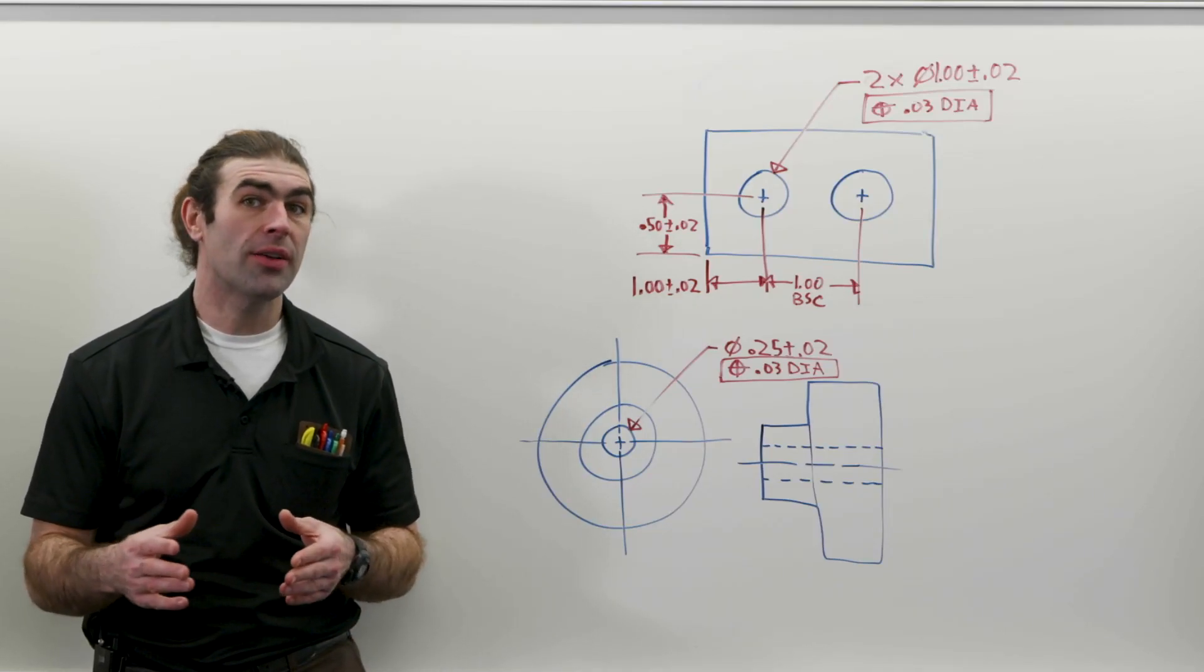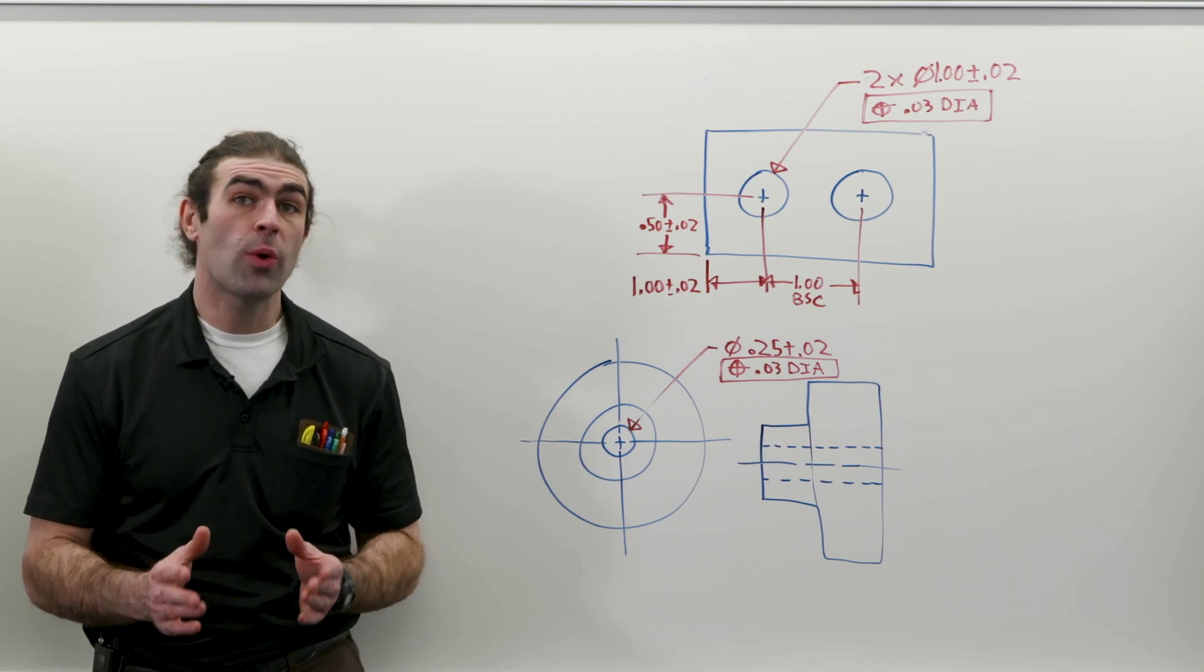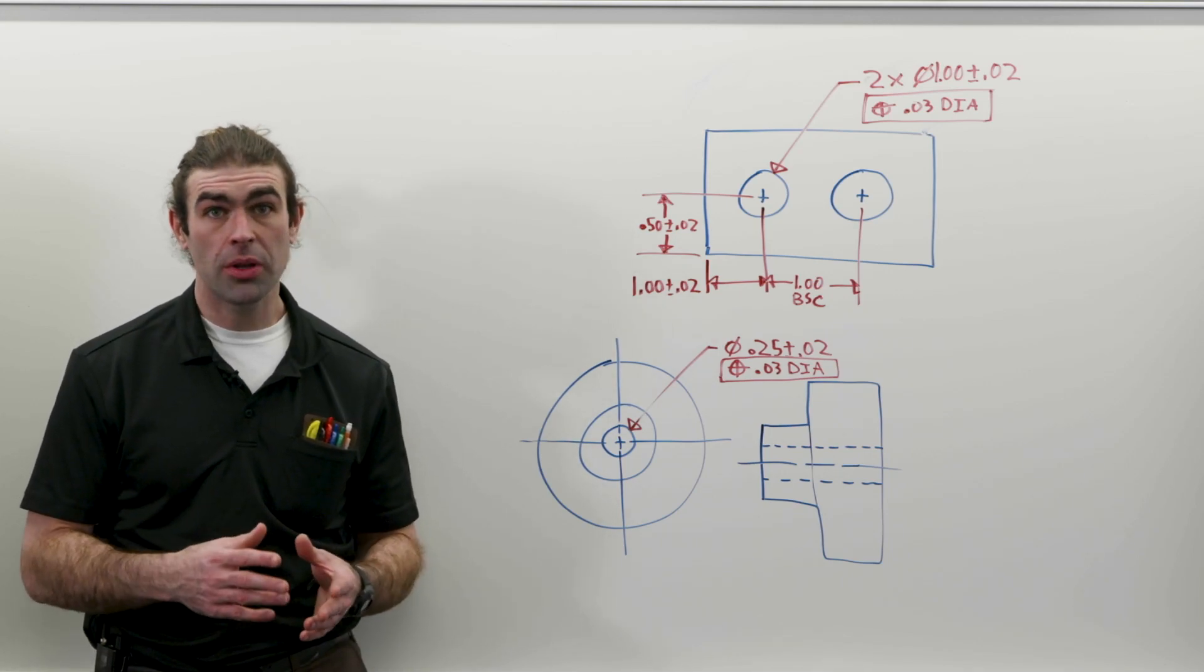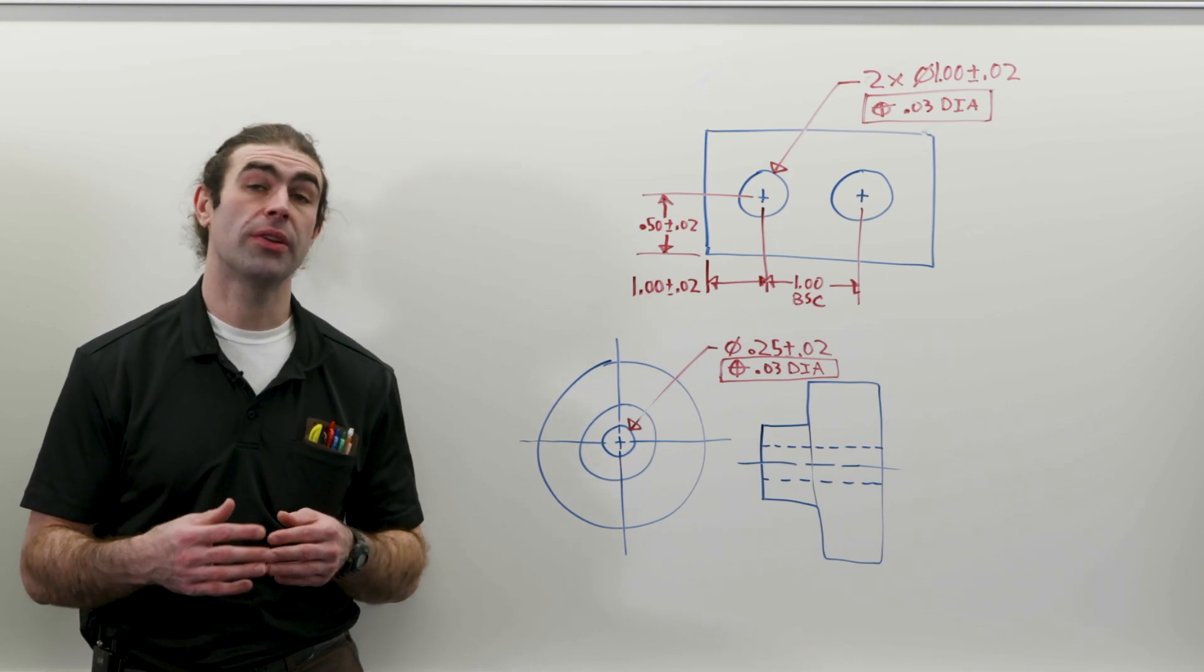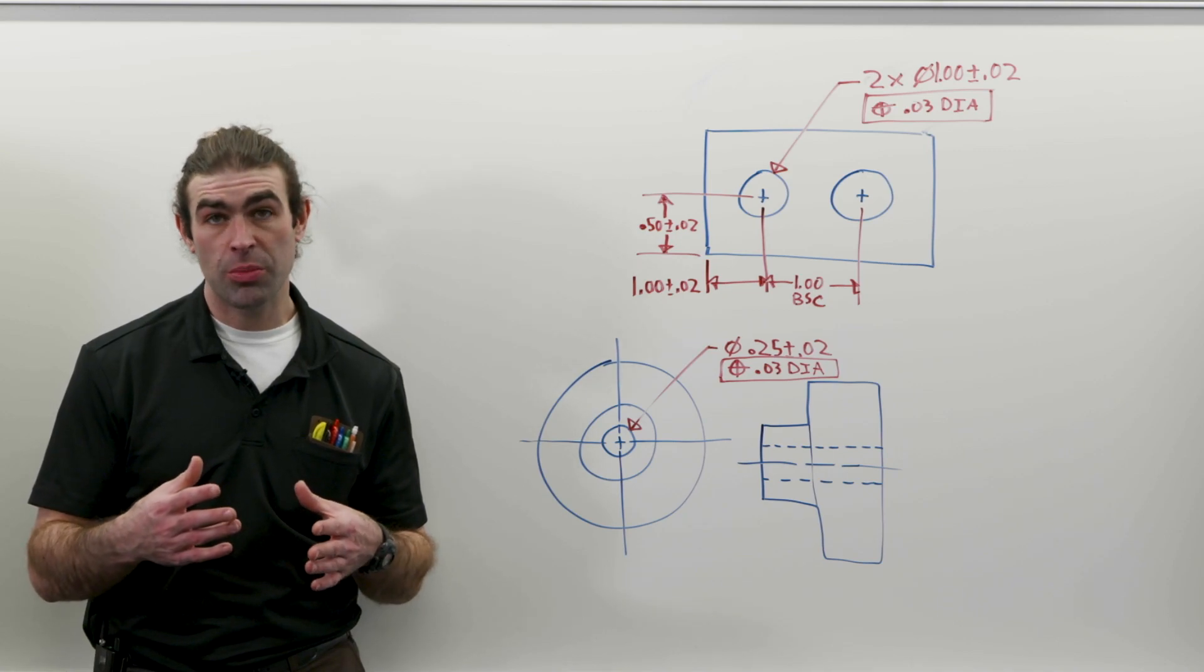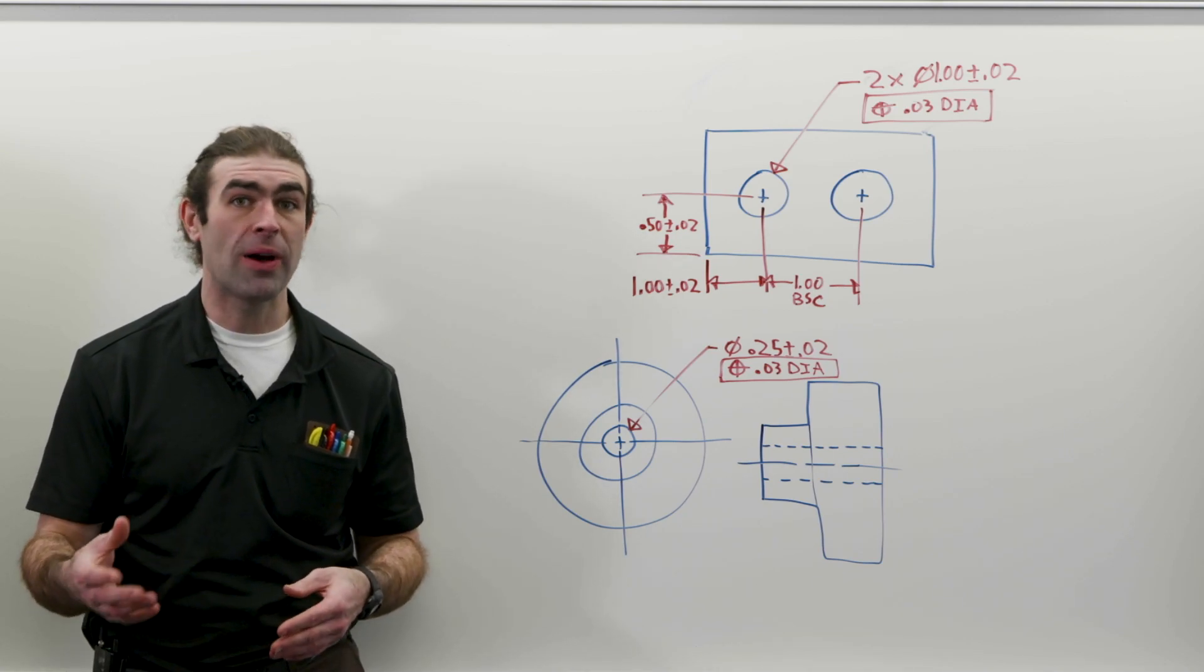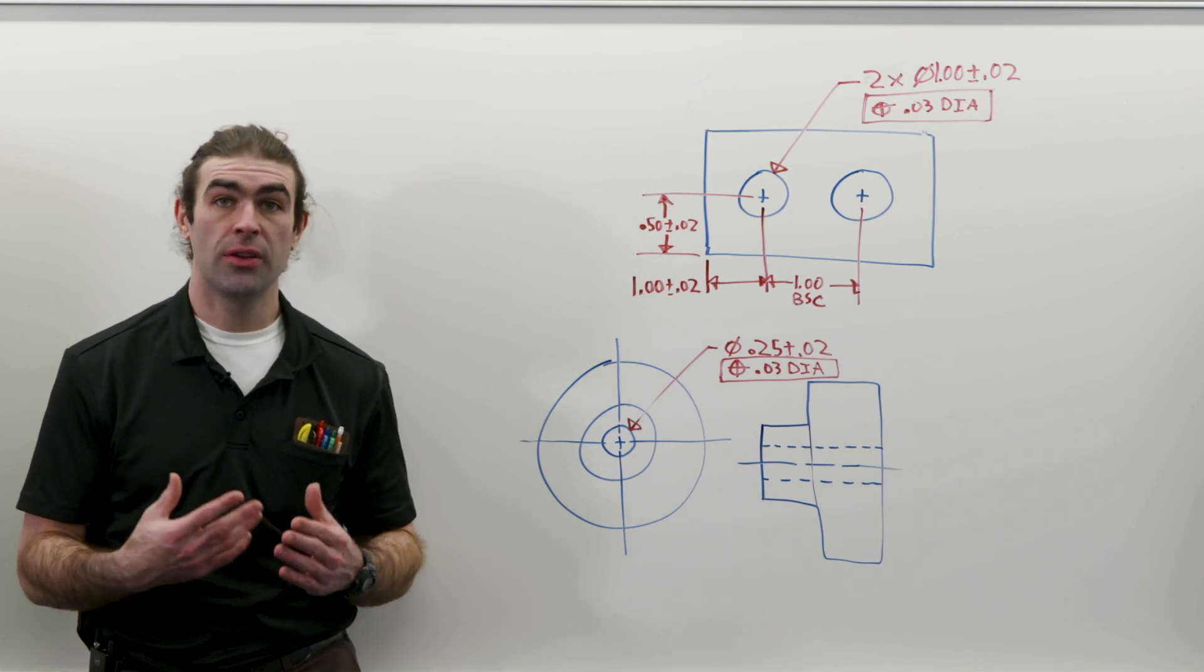In this video, I want to address a really great question I got in a YouTube comment. The question was, can you use plus or minus dimensions instead of basic dimensions with position tolerances? Specifically, they asked if it could be used in the 1994 ASME Y14.5 standard. The short answer to the question is no.